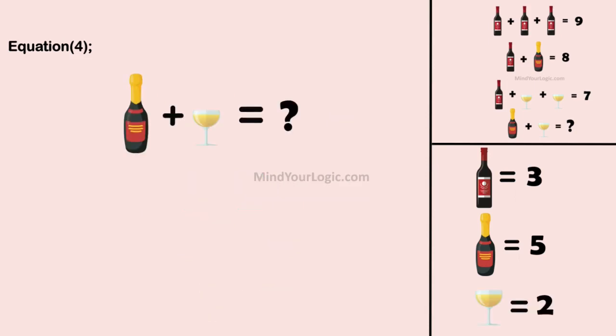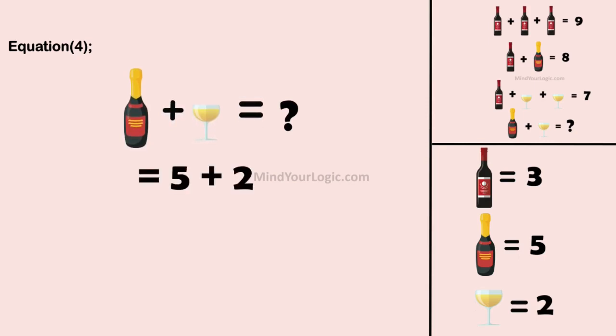Moving to the final equation: Champagne plus glass equals question mark. Substituting the values, we get the value of the final equation as 7. Thank you.